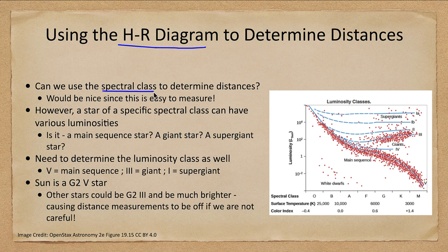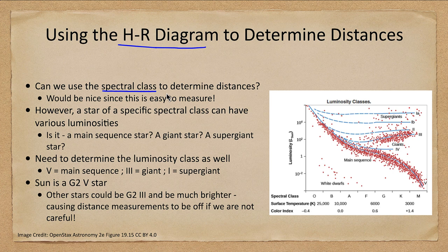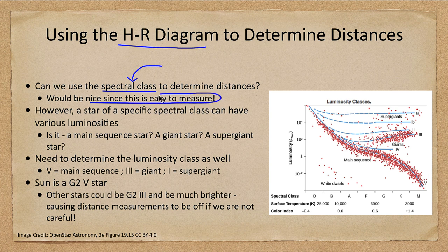Can we use the spectral class of a star to determine distance? Remember the spectral class only depends on the spectrum. So as long as the star is bright enough that we can see a spectrum, this is good because it is then easy to measure.